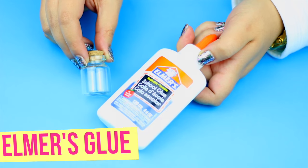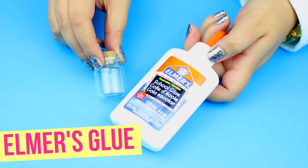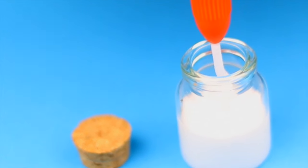To make the milk jar, I used Elmer's glue to represent the milk, but you can also use water with some drops of white paint.